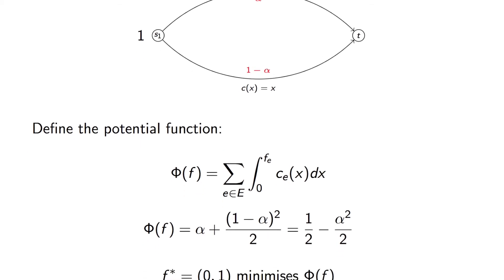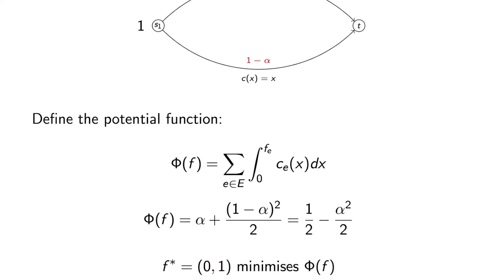What's interesting to note is that f* = (0, 1) minimizes phi of f. And if you remember, (0, 1) was actually the Nash flow for this game.